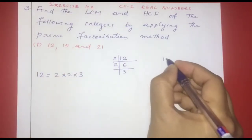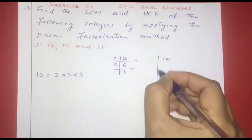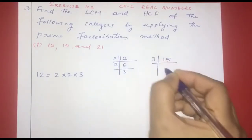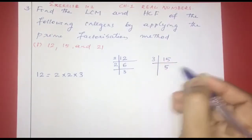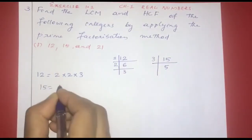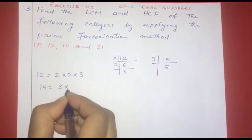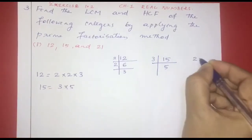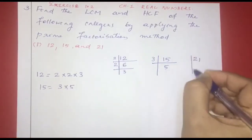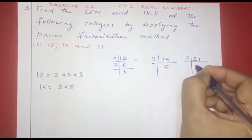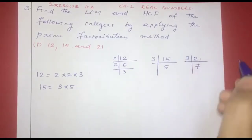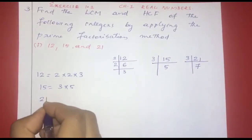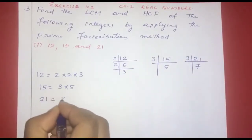Now we find the prime factors of 15 and 21. 15 equals 3 × 5. For 21: 3 gives 7, so 21 is equal to 3 × 7.